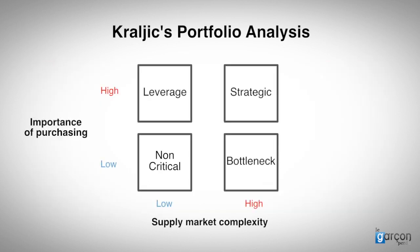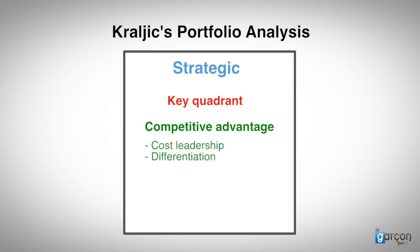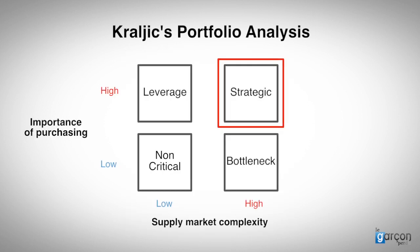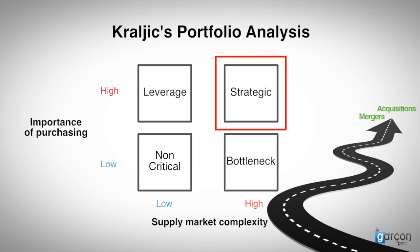So let's look at the final quadrant: strategic. Kralich saw this as the key quadrant for the development of strategic behaviour, and for good reason. This is where most companies source their competitive advantage, whether through cost leadership or differentiation. It's where public sector entities can contribute towards their strategic outcomes, whether through achieving value for money or realising policy goals. The point is that categories are not in this quadrant by chance. They are here as a result of business strategies pursued over several years — of patents, licences, acquisitions, and mergers.